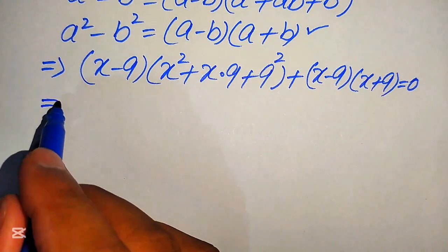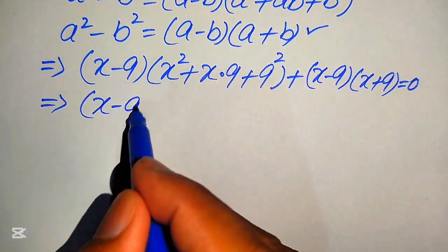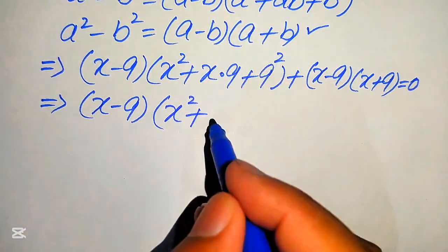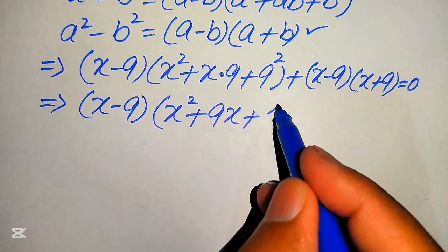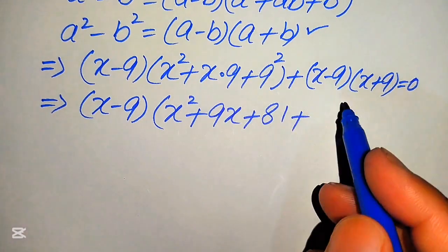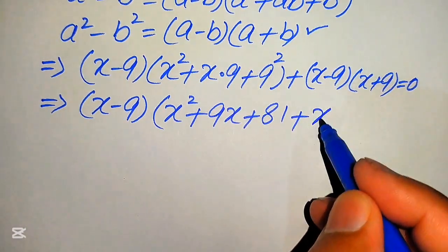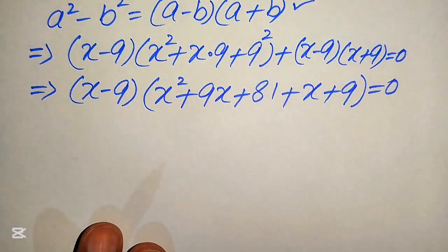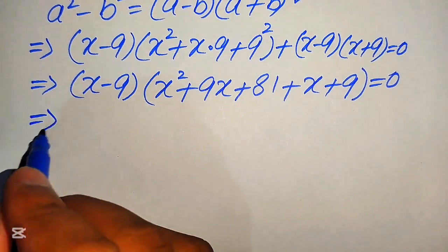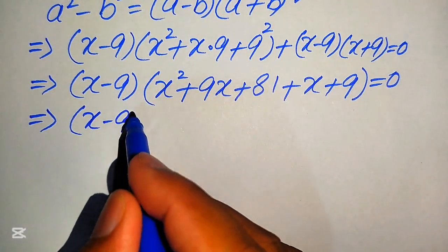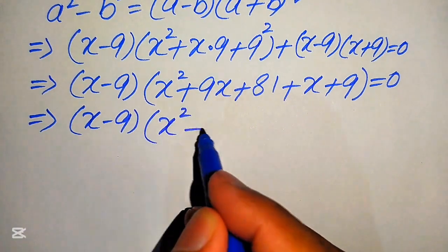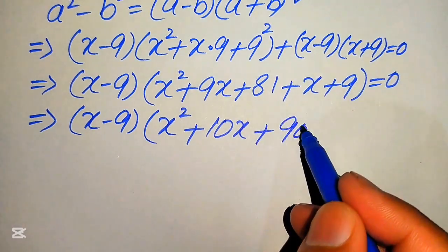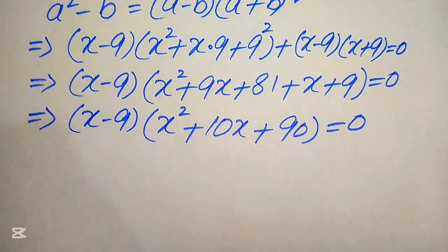From both terms we have (x minus 9) as a common factor, so we factor it out. This gives us (x minus 9) times [(x squared + 9x + 81) + (x + 9)] equals 0. Combining like terms inside the bracket: 9x + x becomes 10x, and 81 + 9 becomes 90, so we get (x minus 9)(x squared + 10x + 90) equals 0.